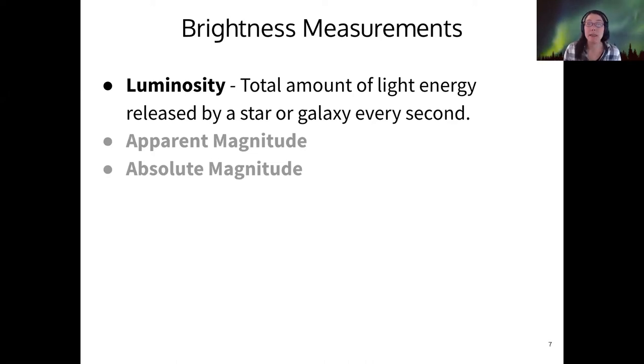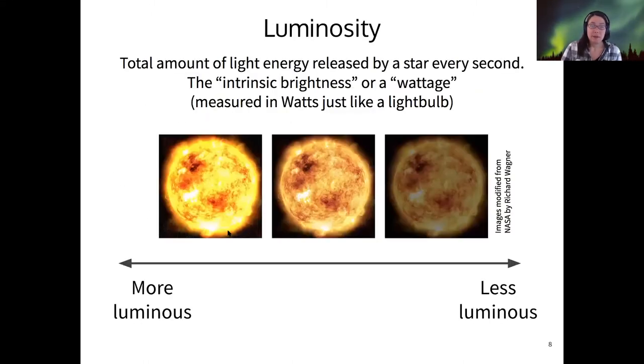Okay, so starting with luminosity, this is the total amount of light energy that's released by a star every second. So if I wanted to look at the sun, for example, compared to other stars, a more luminous star would be brighter, and a less luminous star would be less bright, if there's no complicating factor of how far away from the star you are. So this is the total energy released every second.